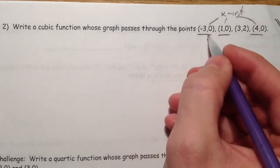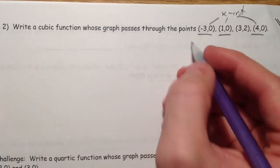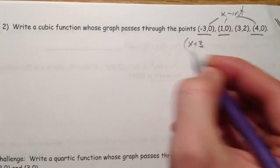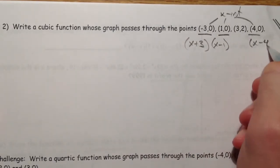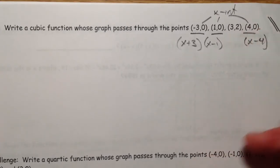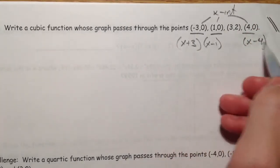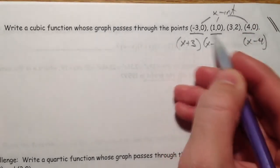And so, if negative 3, x plus 3 is a factor. x minus 1 is a factor. x minus 4 is a factor. Because we would take all of these and set them equal to 0 and then solve for each one of those.